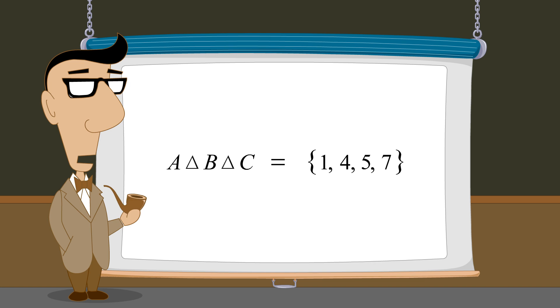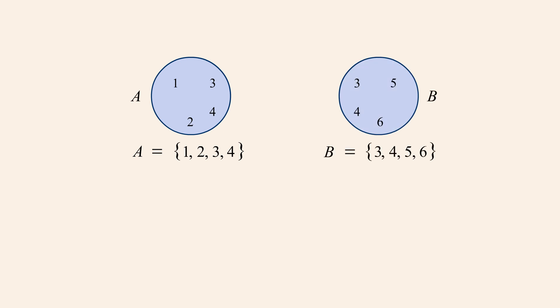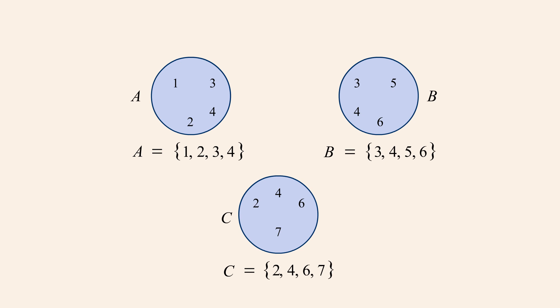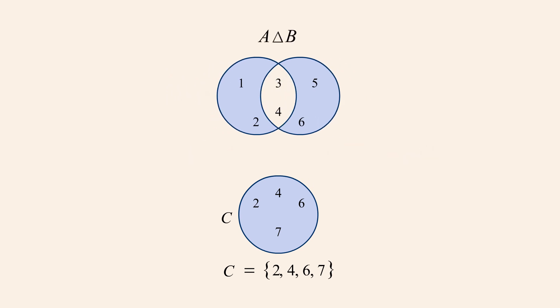Now let's form the symmetric difference one last time using numbers and Venn diagrams. Once again, set A contains the numbers 1, 2, 3, and 4. Set B contains 3, 4, 5, and 6. And set C contains 2, 4, 6, and 7. We first form the symmetric difference of sets A and B. These two sets have the elements 3 and 4 in common, so their symmetric difference includes all the elements except 3 and 4. The symmetric difference of A and B therefore consists of 1, 2, 5, and 6.